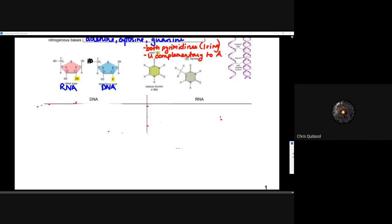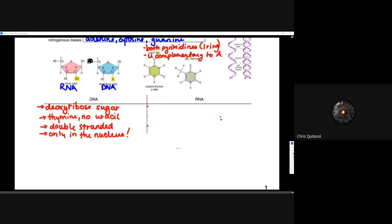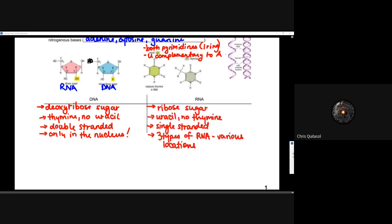In DNA, we have deoxyribose sugar — meaning there's no hydroxyl group on that second carbon — and thymine is present instead of uracil. It is double stranded and will only be in the nucleus. Whereas RNA has ribose sugar, uracil and no thymine, and is single stranded, which is very important. As we move through this lesson, the single-stranded nature of RNA will really help us understand how those proteins get made from it and why it's so important that we transcribe DNA to RNA.